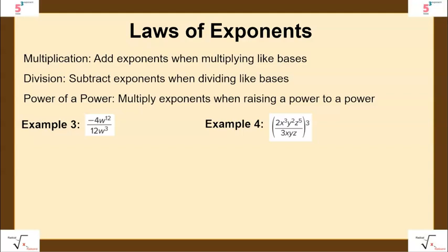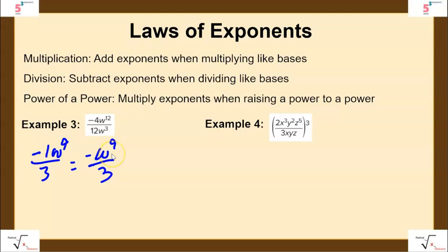A couple more examples. Here we have division. First I take the coefficients: negative 4 divided by 12 is negative 1 third. Then when I divide like bases, I subtract the exponents: 12 minus 3 is 9, so I have w to the 9th power on top. Rewriting this, it's negative w to the 9th all over 3. The variable stays in the numerator because we had more w's on top — subtracting leaves w to the 9th in the numerator.